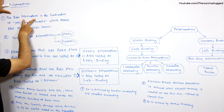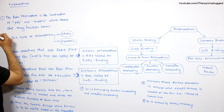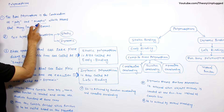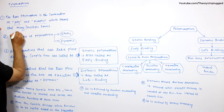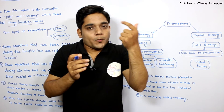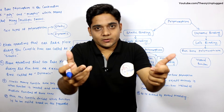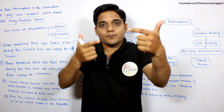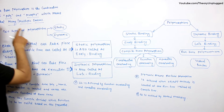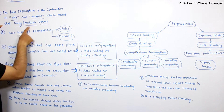The term polymorphism is the combination of 'poly' and 'morphs', which means many or multiple forms. It is a simple concept — one name, multiple forms.